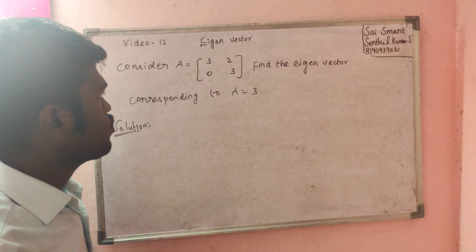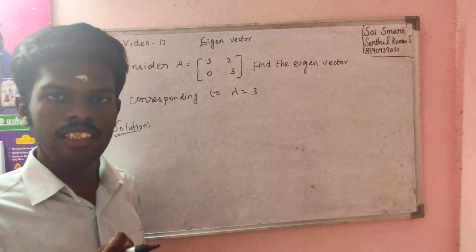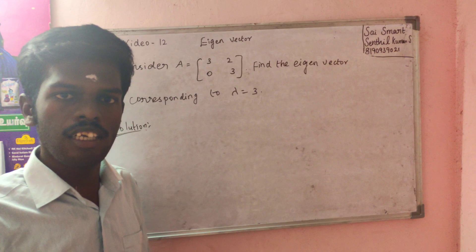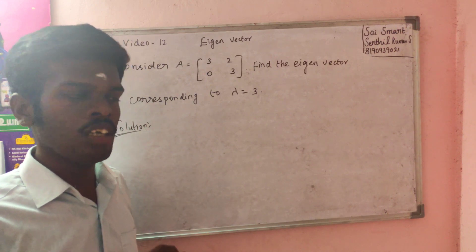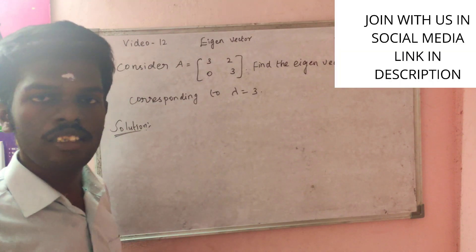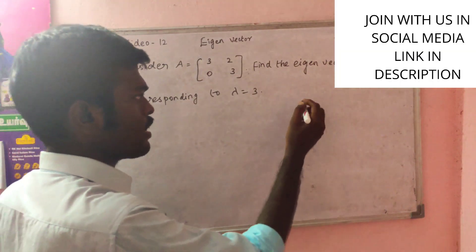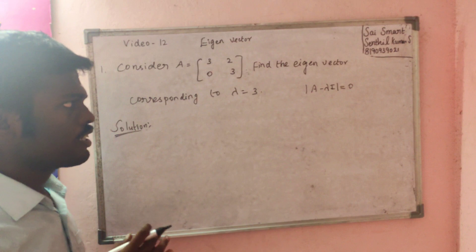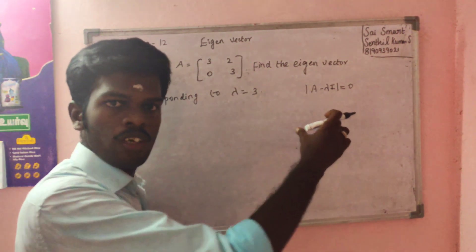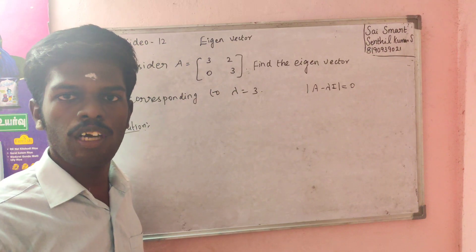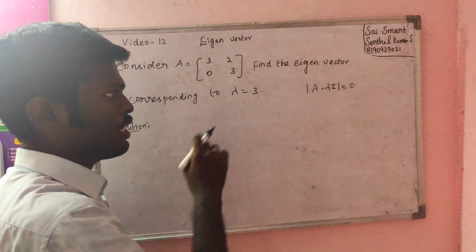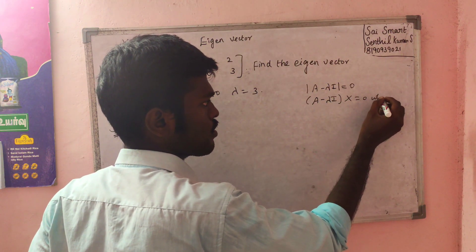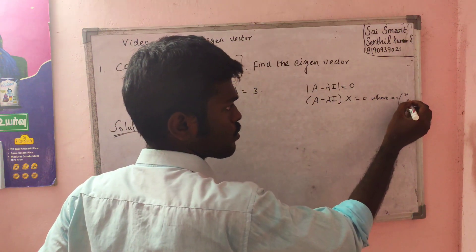First, consider A equals [3, 2; 0, 3]. Eigenvalues and eigenvectors are relevant here. To find eigenvectors, we use the characteristic equation: the determinant of A minus lambda I equal to 0. The formula is: A minus lambda I into x equals 0, where x equals some vector [x, y, ...].